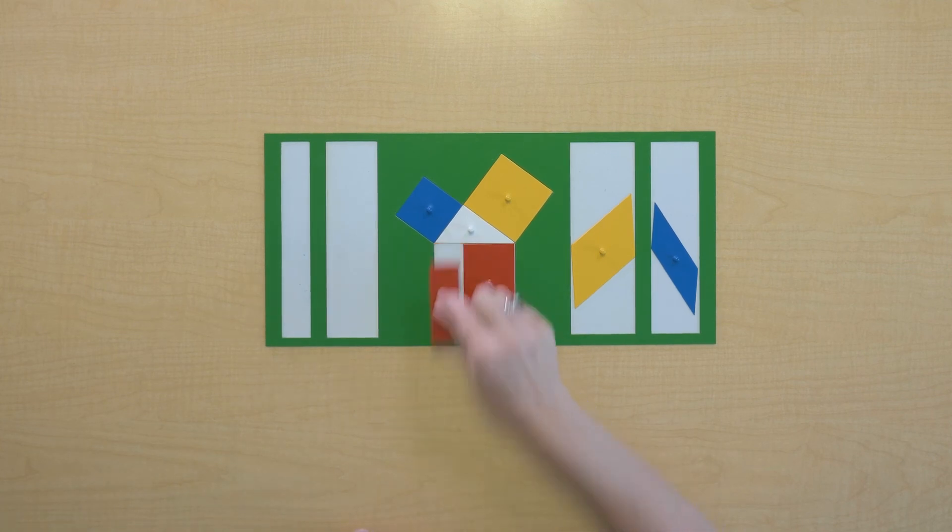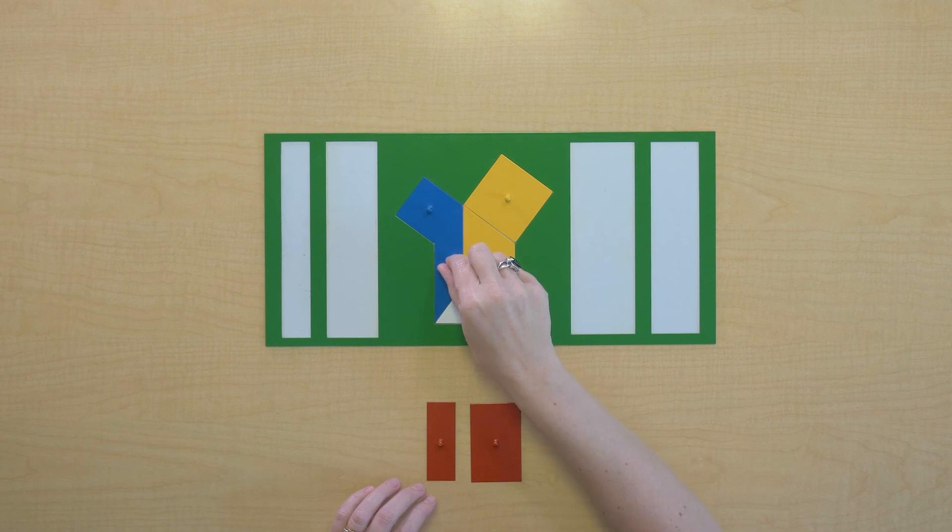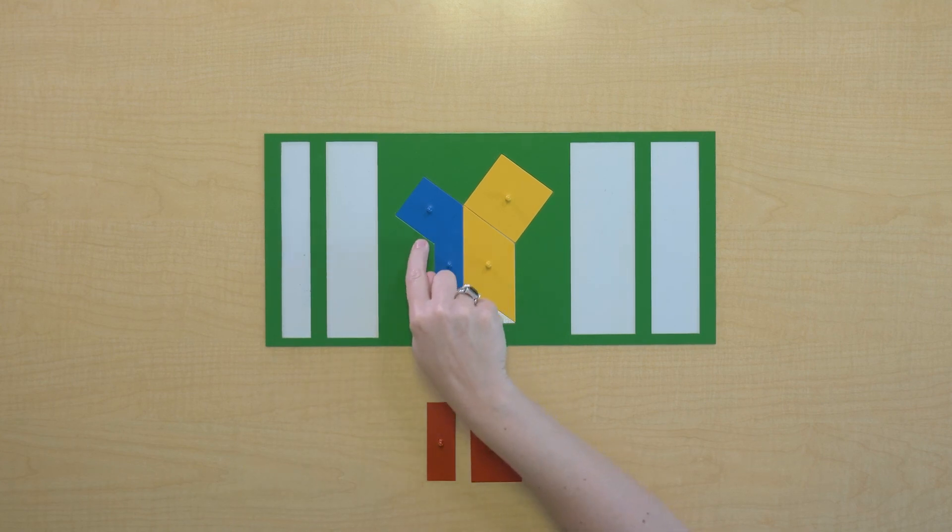So to go back to what we looked at to begin with, the blue parallelogram and the yellow parallelogram take up the space of the red square. And we know that the blue parallelogram is equivalent to the blue square and the yellow parallelogram is equivalent to the yellow square.